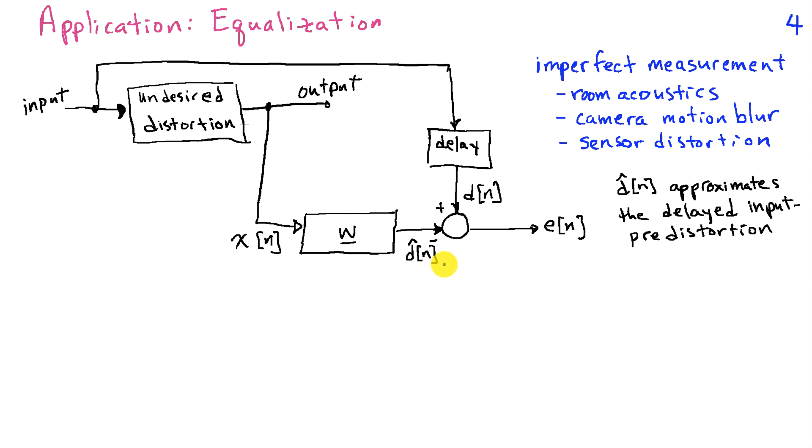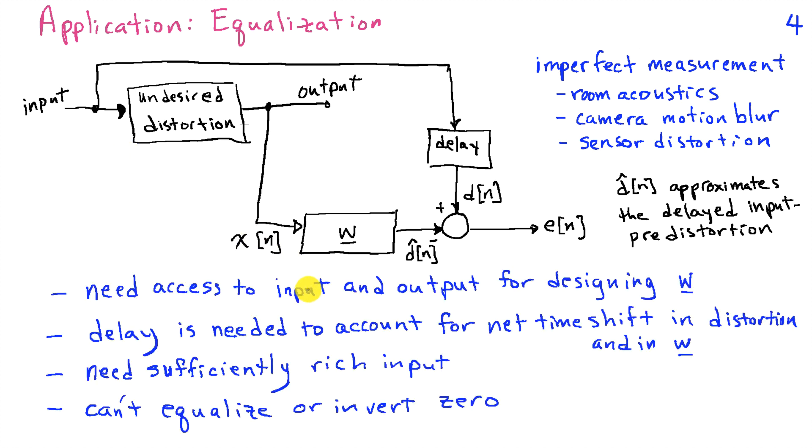And that's something I don't want to get into right now. But if we can drive e of n to be very small, then W is recovering the input to our distortion from the output. And it's equalizing or undoing the effect of the distortion on the input signal.